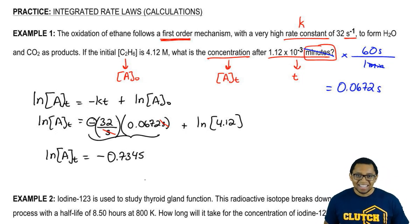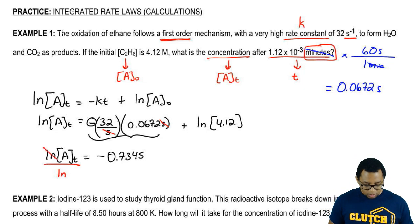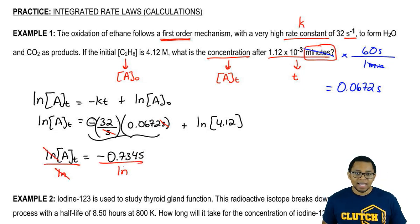But remember, we don't want LN of AT, we just want AT, our final concentration by itself. So we want to get rid of LN, so we divide both sides by LN. Now we're not really dividing that number by LN because if you did that in your calculator, it will give you an error. When I say divide by LN, I'm really saying we're taking the inverse of the natural log.